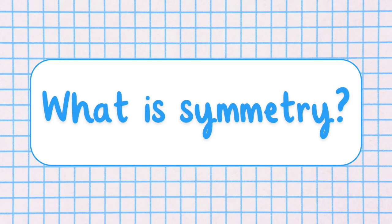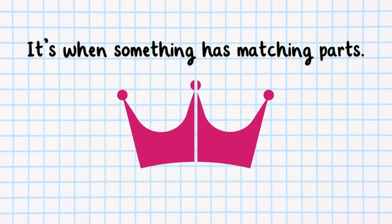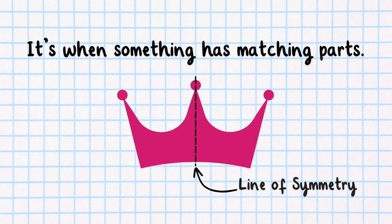So what is symmetry in math? It's when something has matching parts. Symmetrical shapes have a special line we call a line of symmetry. And if you fold them along this line, both sides match perfectly.